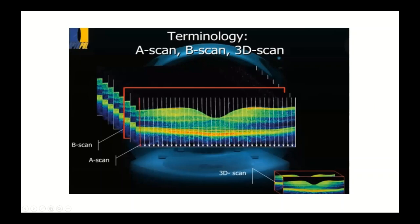When we look at an OCT scan of the macula, it is actually composed of multiple A-scans. These are collected and analyzed as a B-scan — so a B-scan is made up of multiple A-scans.